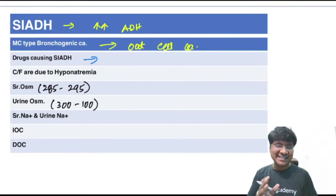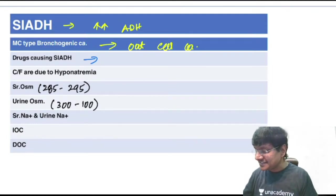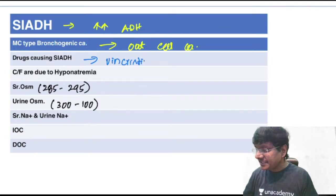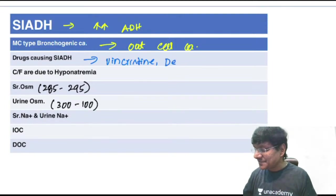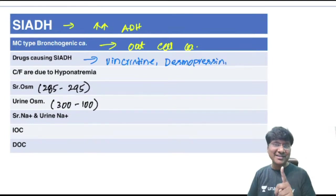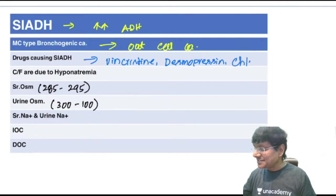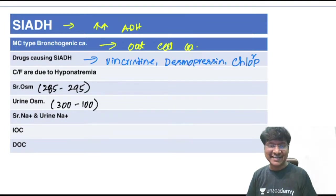Drugs causing SIADH include vincristine (vinca alkaloids), desmopressin, and chlorpropamide — a first-generation sulfonylurea. Chlorpropamide can also cause SIADH.